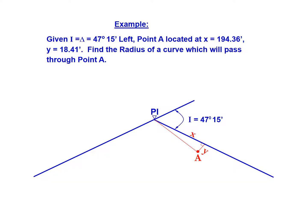In this example we'll look at fitting a horizontal curve through a fixed point. We're told that we have an alignment with an intersecting angle of 47 degrees 15 minutes.